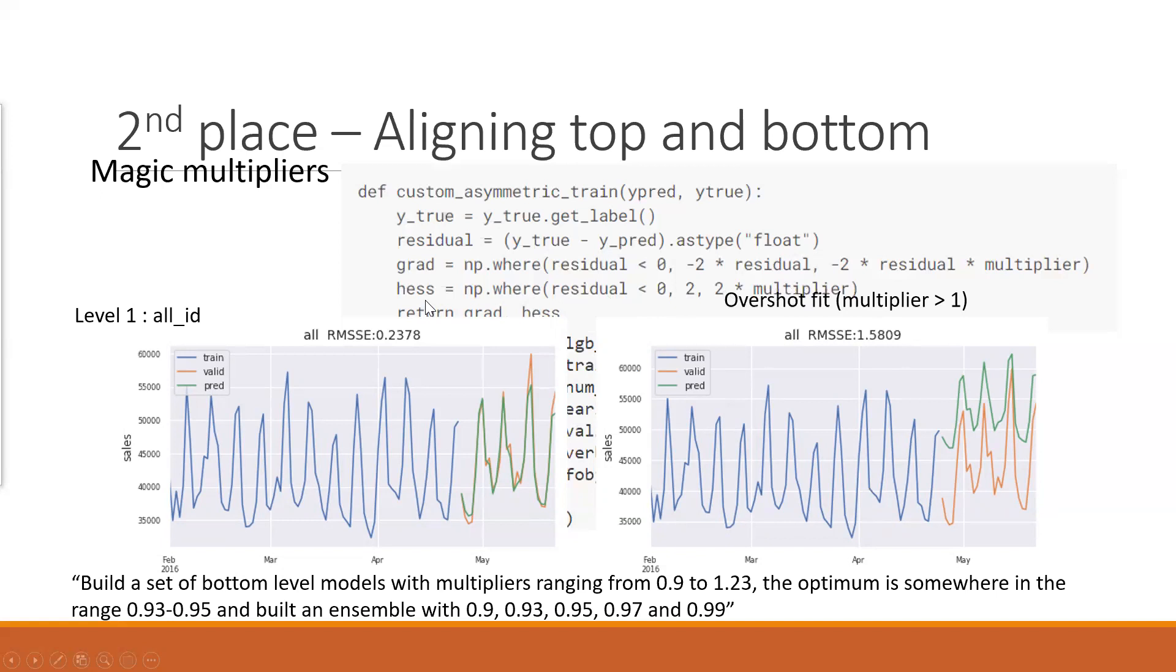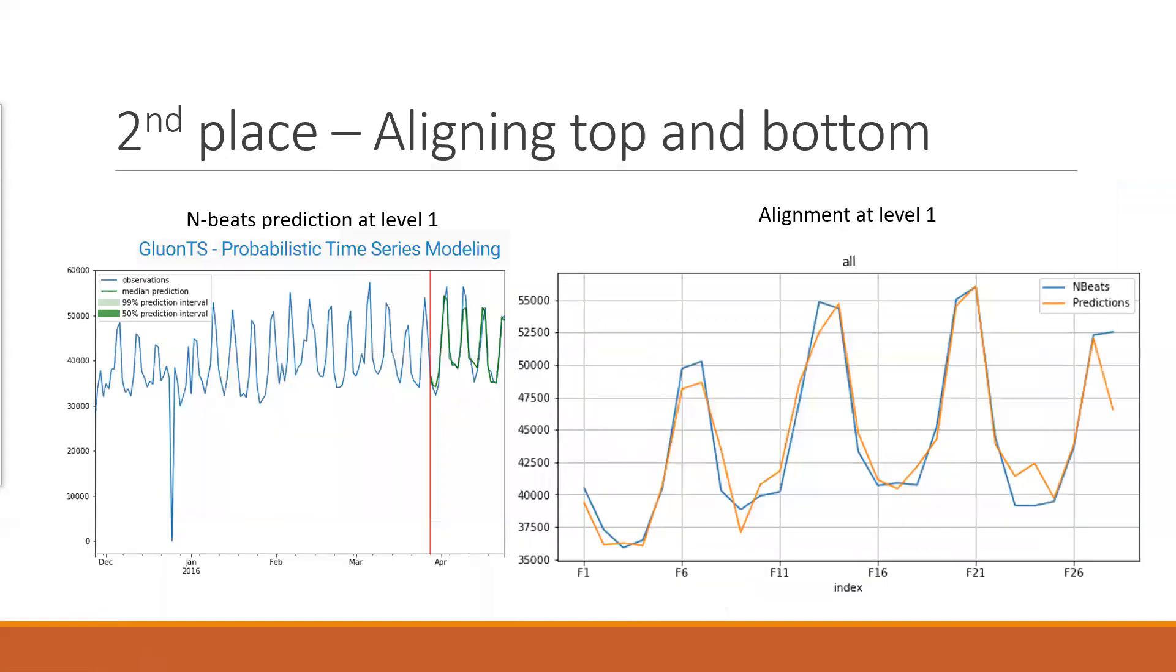So what it means is, if the multiplier is larger than one, you tend to overshot. And if the multiplier is smaller than one, so if it's equal one, then it's symmetric. And if it's smaller than one, it will tend to underfit. So that's how they want to kind of adjust the low level prediction with that. The same multiplier applies to the Hessian. So they basically, as they mentioned, they build a set of bottom level models with the different multipliers that is basically defining their objective. And then they find the optimal setting of that is somewhere around 0.93 to 0.95. So they build an ensemble of these set of values. And actually this loss function is not come up by them. Actually it's a very hot discussion in the forum. Everybody's saying this can help with the performance. And then they pick this customized objective. And then they tune the multipliers so that they can get aligned with the top levels forecast.